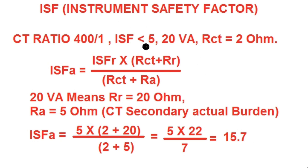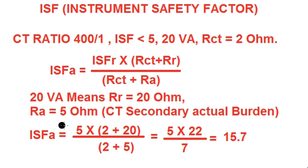So although the nameplate ISF is less than 5 for this metering class CT, the actual ISF comes out to 15.7 — meaning if 15.7 times the primary rated current flows, the CT will saturate. The CT saturation current increases when the actual burden changes. Since the actual burden is 5 Ω, which is one-fourth of the rated burden of 20 Ω, the actual ISF becomes more than three times the rated ISF.